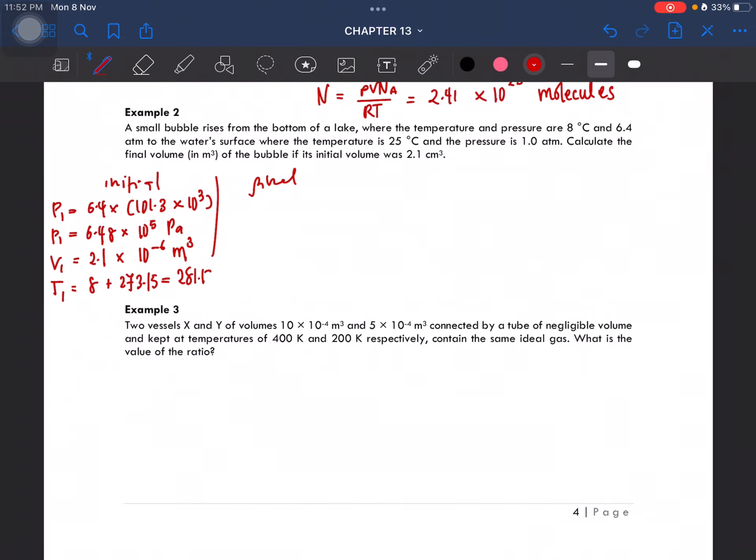Okay, so the final one: P₁ as 1 atmospheric pressure, so the pressure is 101.3 kilopascals. And the volume is the one that we are looking for. And then we have the temperature which is 25 plus 273.15, that's 298.15 Kelvin.